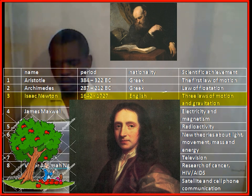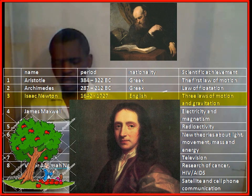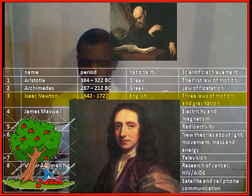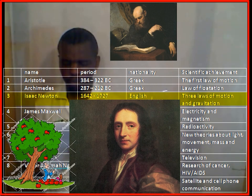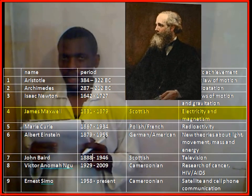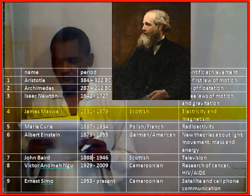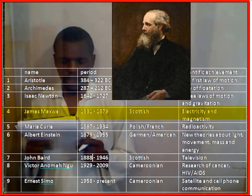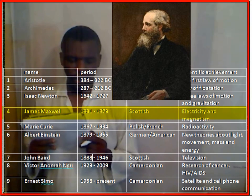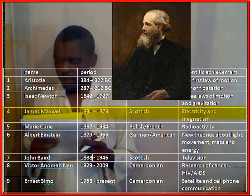Isaac Newton lived in the period 1642 to 1727, was an English national, and he discovered the spectrum, the law of gravitation, and the three laws of motion. James Maxwell lived between 1831 to 1879, he was Scottish, and he made contributions on electricity and magnetism.